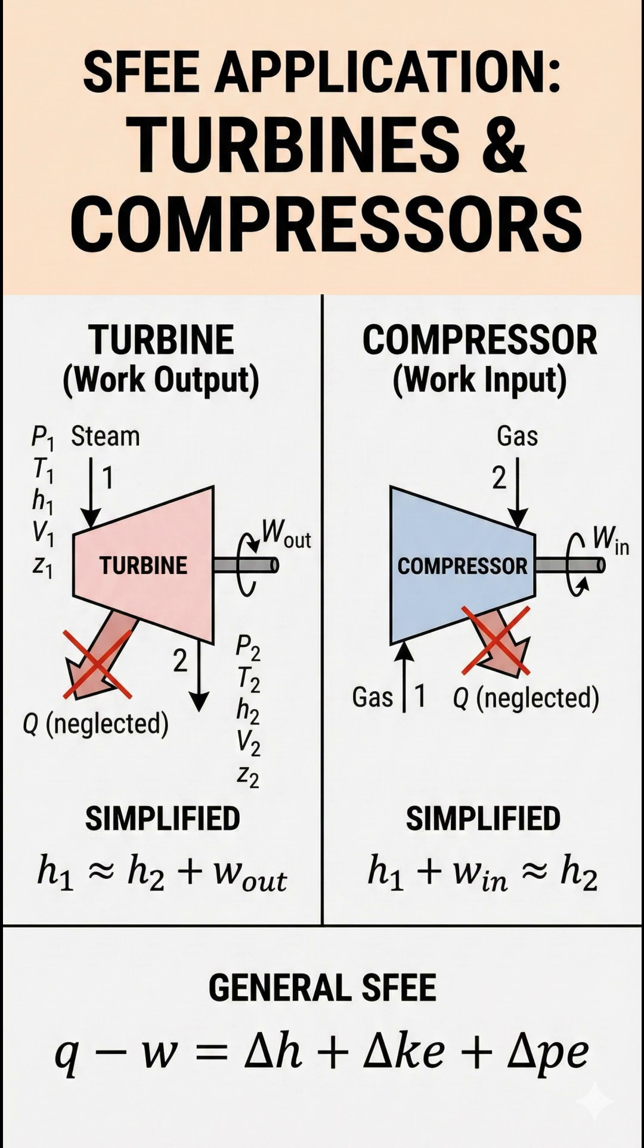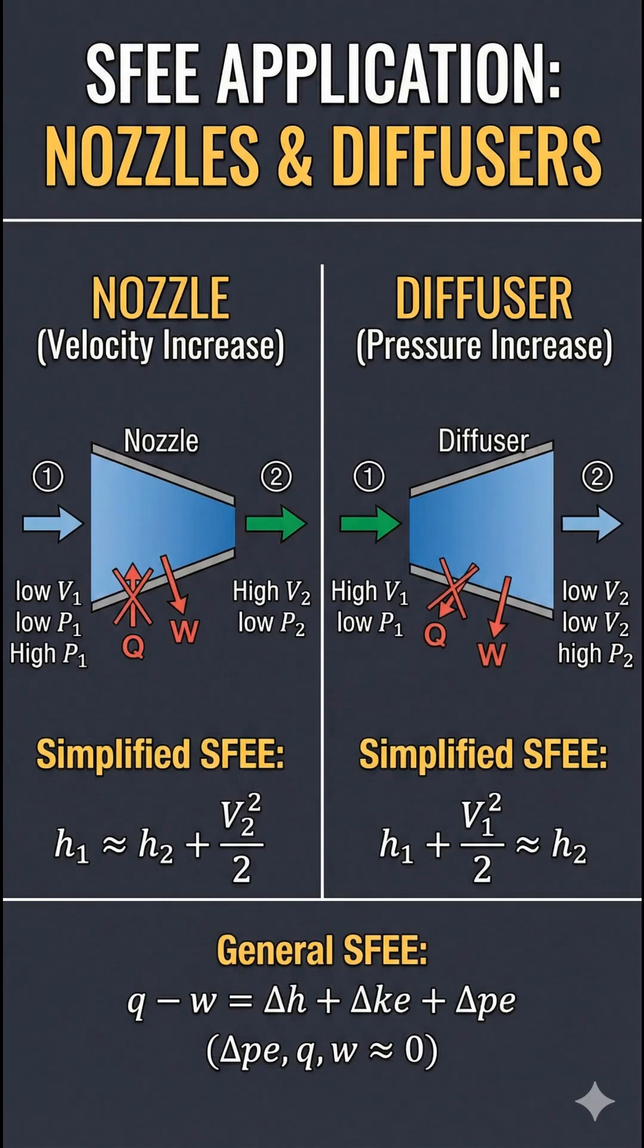Turbines and Compressors. This image shows how the SFE is simplified for turbines, which produce work, and compressors, which consume work. In these devices, heat transfer Q and changes in kinetic and potential energy are typically negligible compared to the work W and enthalpy change.